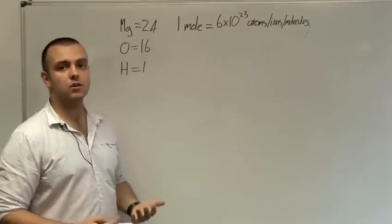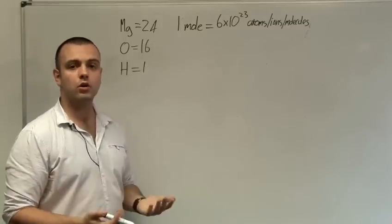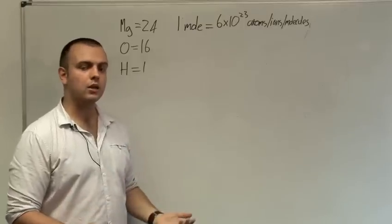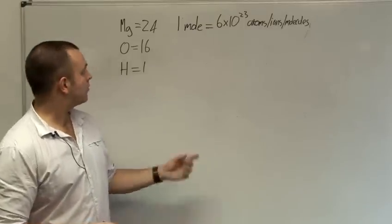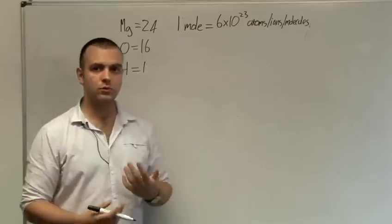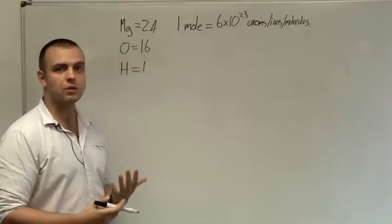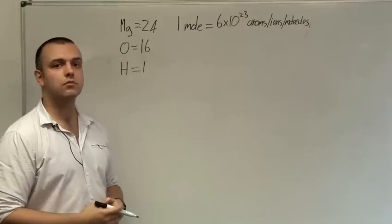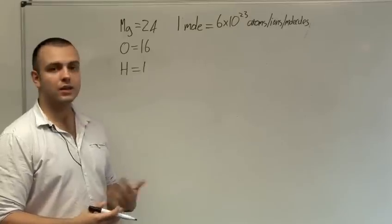Now the relative formula mass of an atom or a molecule tells you how much one mole of that thing will weigh in grams. So for example if you have one mole of magnesium which means if you have 6 times 10 to the 23 magnesium atoms that means it would weigh 24 grams.